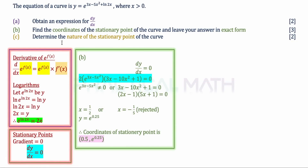Moving on to part C, we are to determine the nature of the stationary point found in part B — whether it is a maximum, minimum, or point of inflection. Both the first derivative test and the second derivative test can be used, although the second derivative test can only determine maximum or minimum, not a point of inflection. Given that the first order differentiation is slightly complicated, I will use the first derivative test to avoid making errors when substituting values.